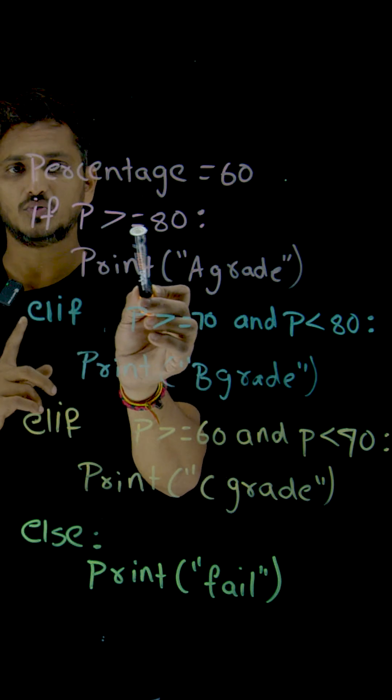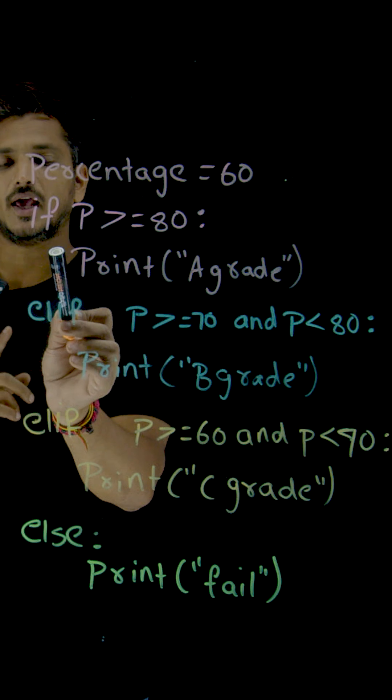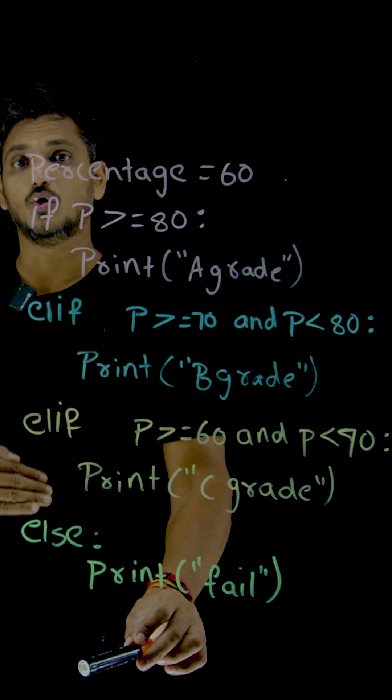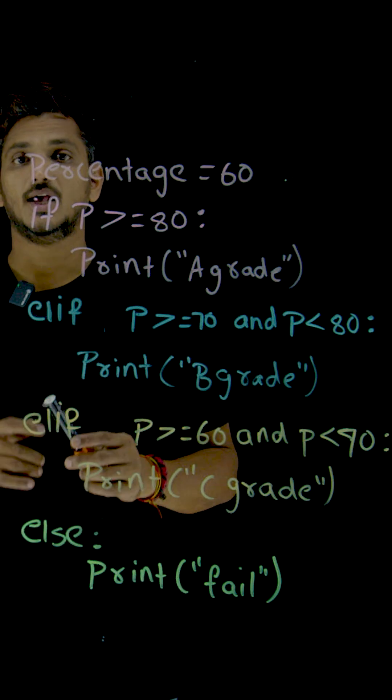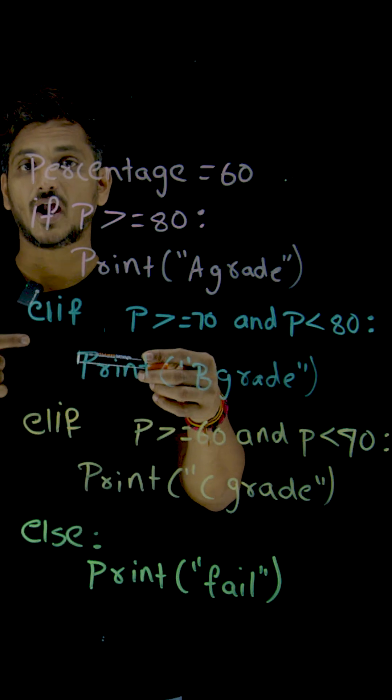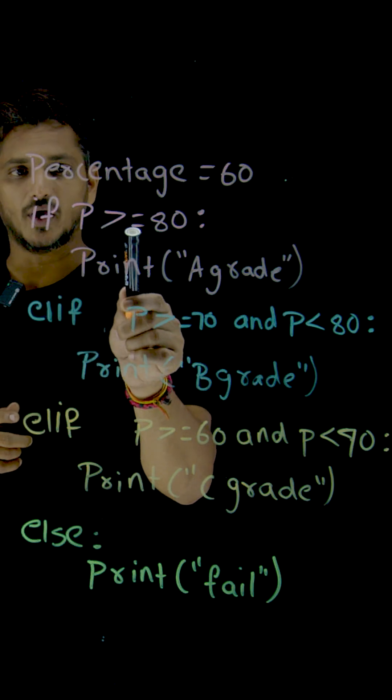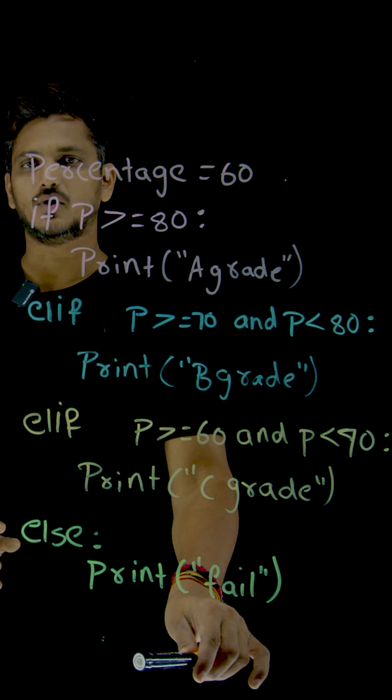Once this condition is true, the execution, after executing the body, the execution jumps from here to the next code. It is not going to check the remaining conditions. That is how if else if ladder is going to be executed. If this condition is true, execute the body, come out of this if conditions. Execute the remaining code.